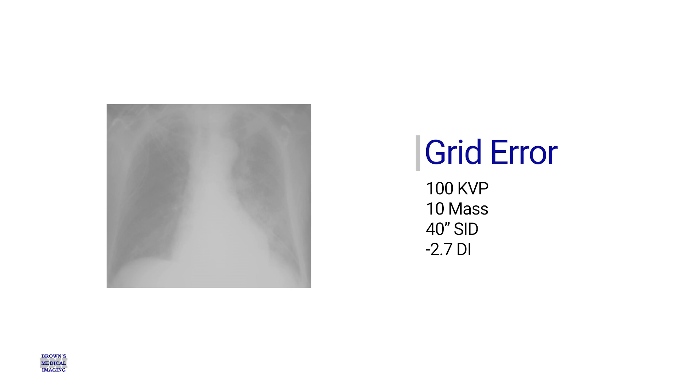This is what we call the trifecta. We have an image that we've used a grid on to increase contrast. We have technical factors that should give us an acceptable DI, yet we have a DI that's negative, showing underexposure — maybe not outside that range, but tending towards underexposure, which our technical factors should not have given us.